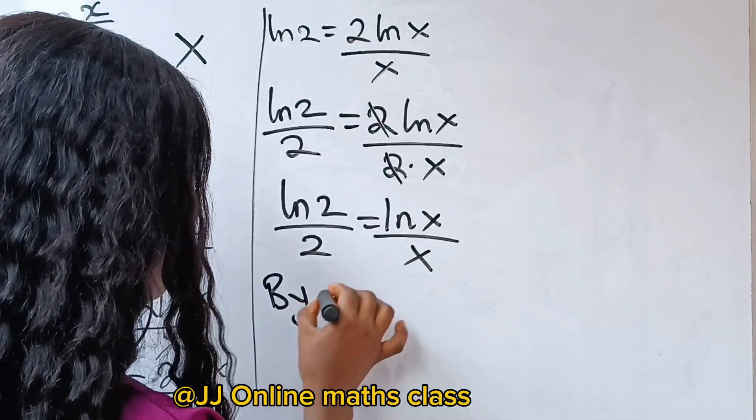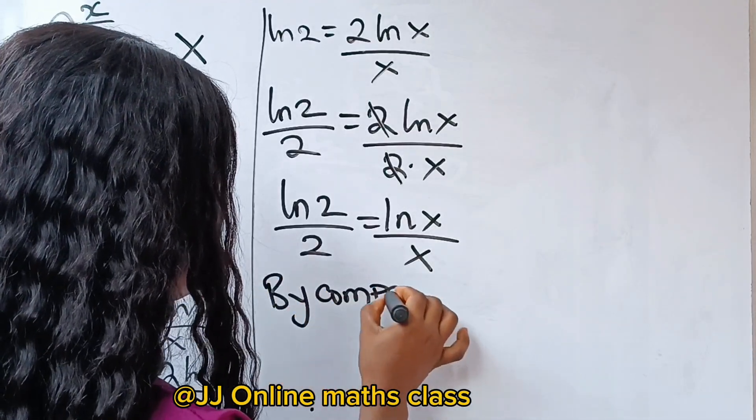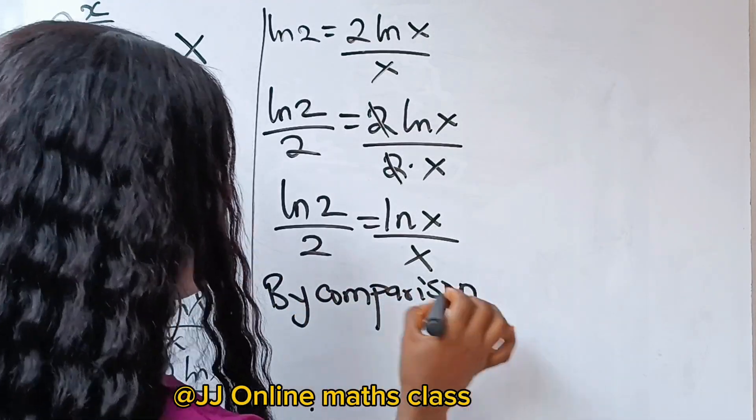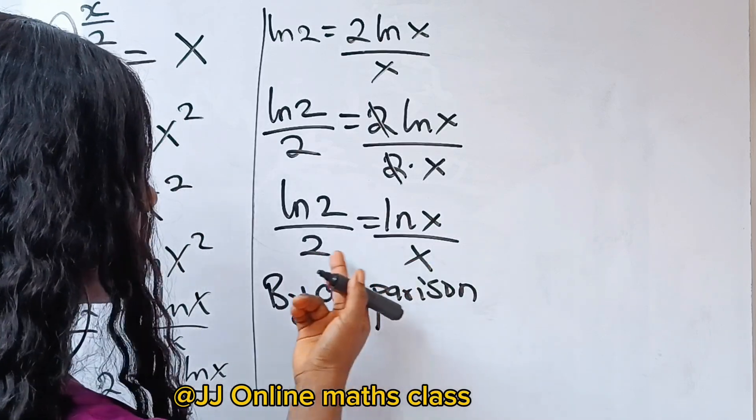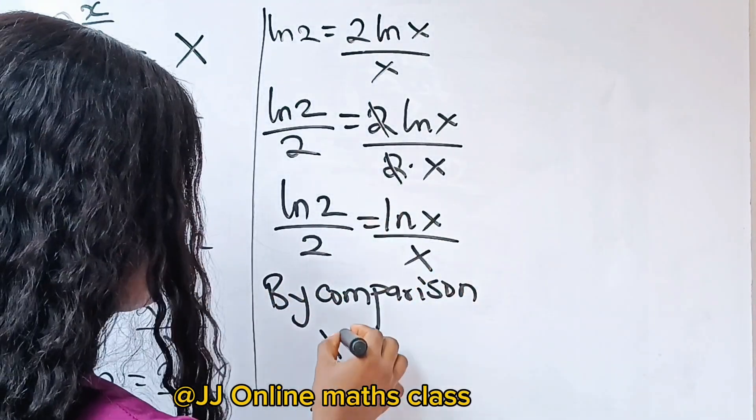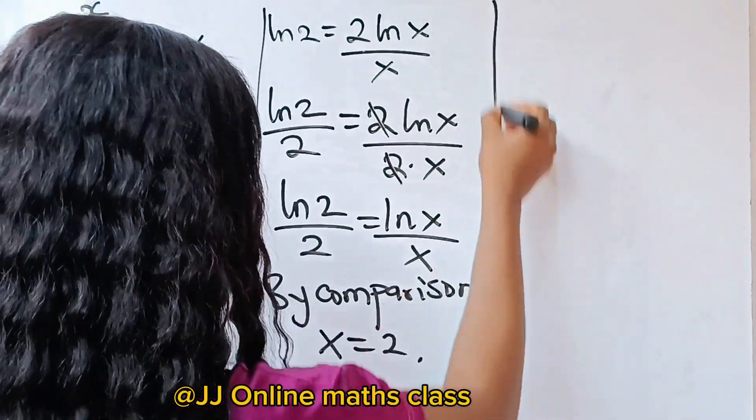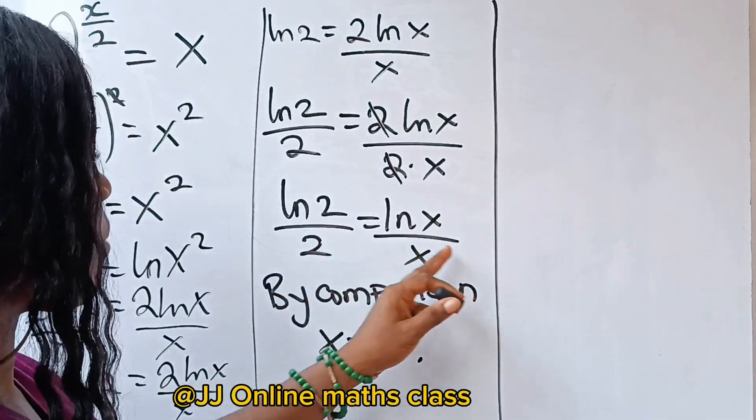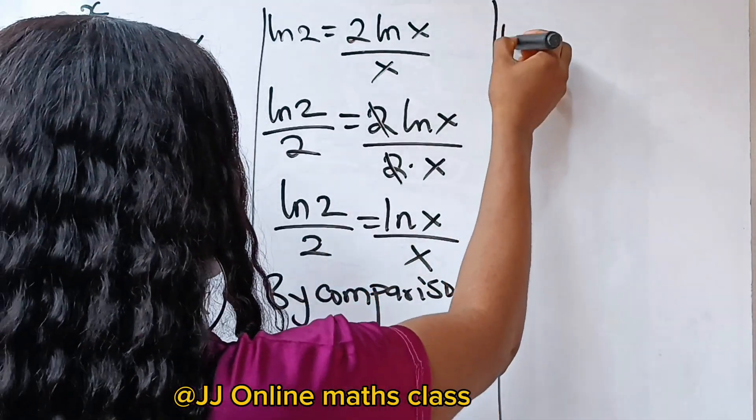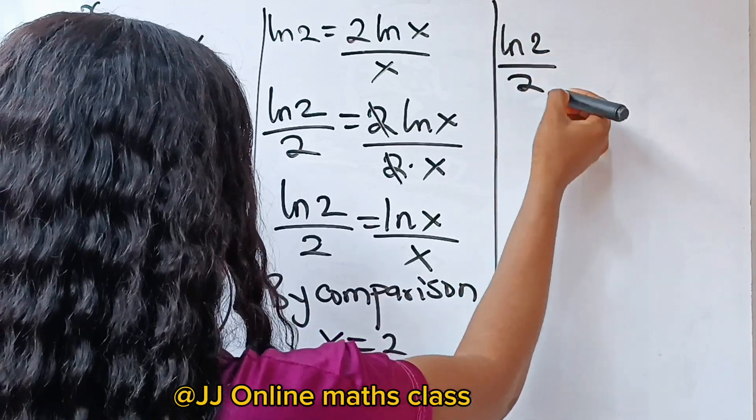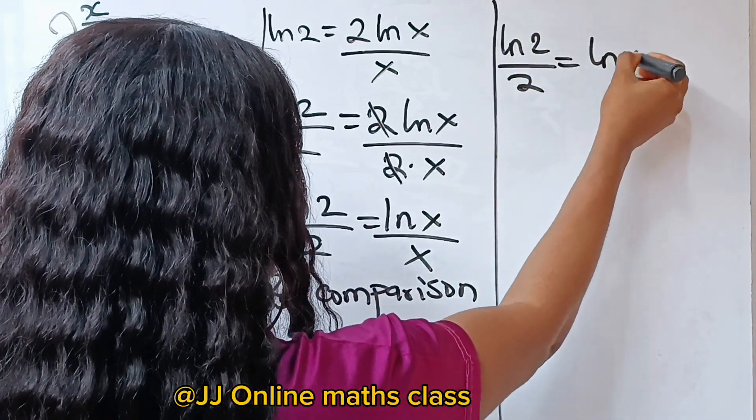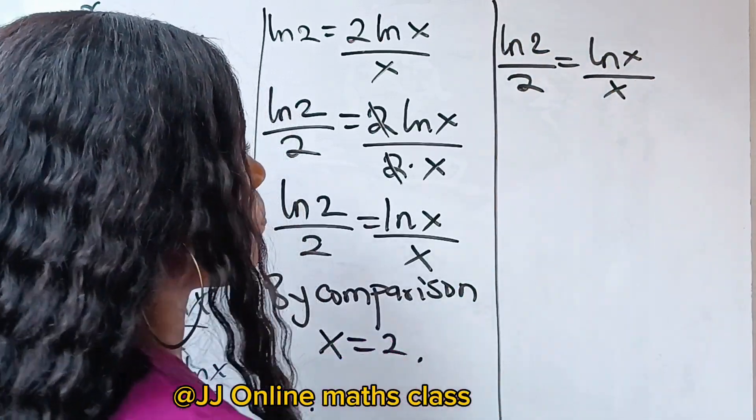So by comparison, we will have that x is equal to 2. By comparison, so this is the first value of our x. Now, let's continue. So we establish this relationship that ln 2 divided by 2 is equal to ln x over x.